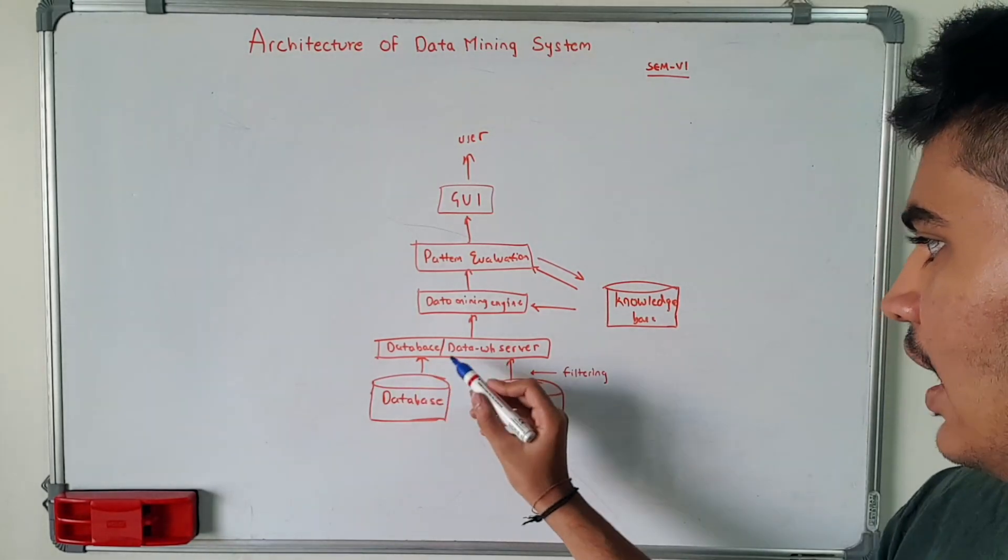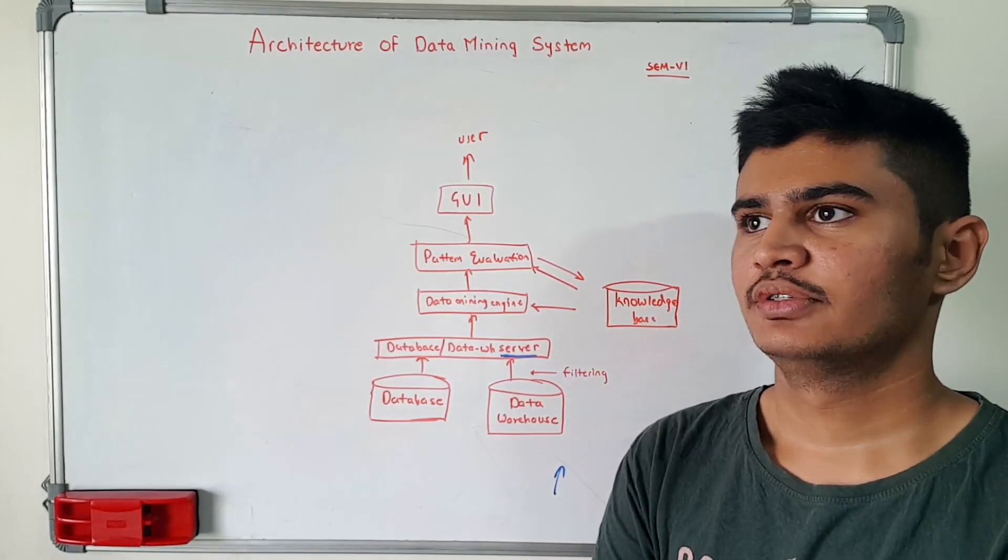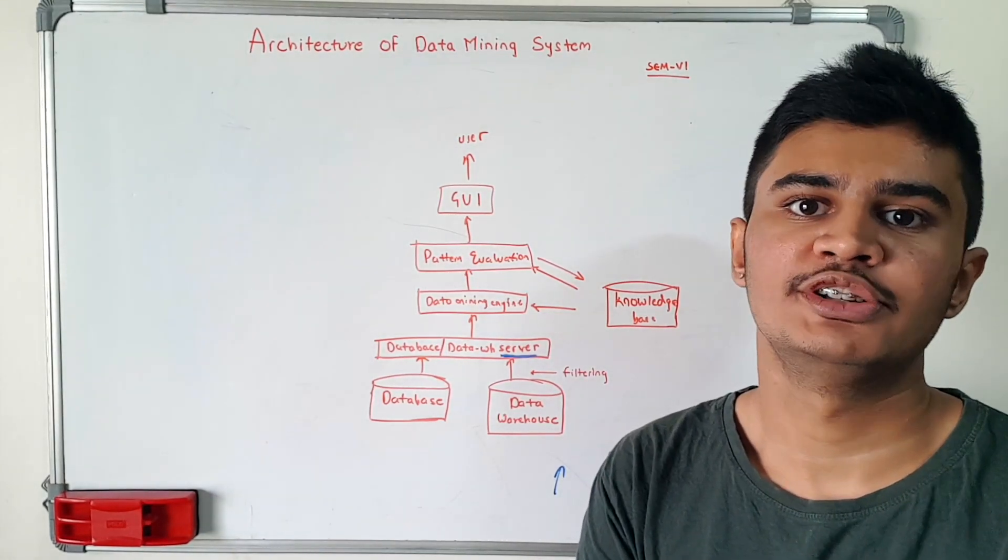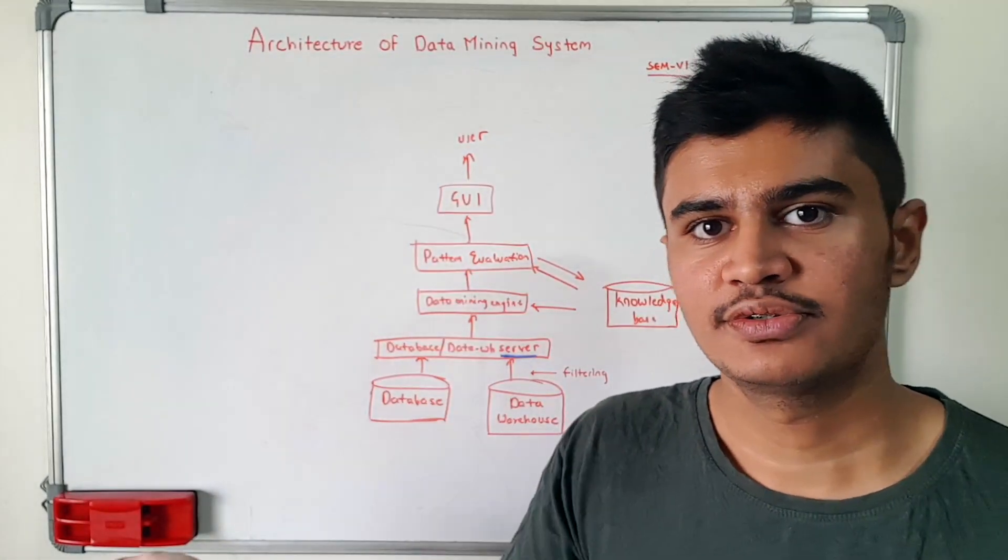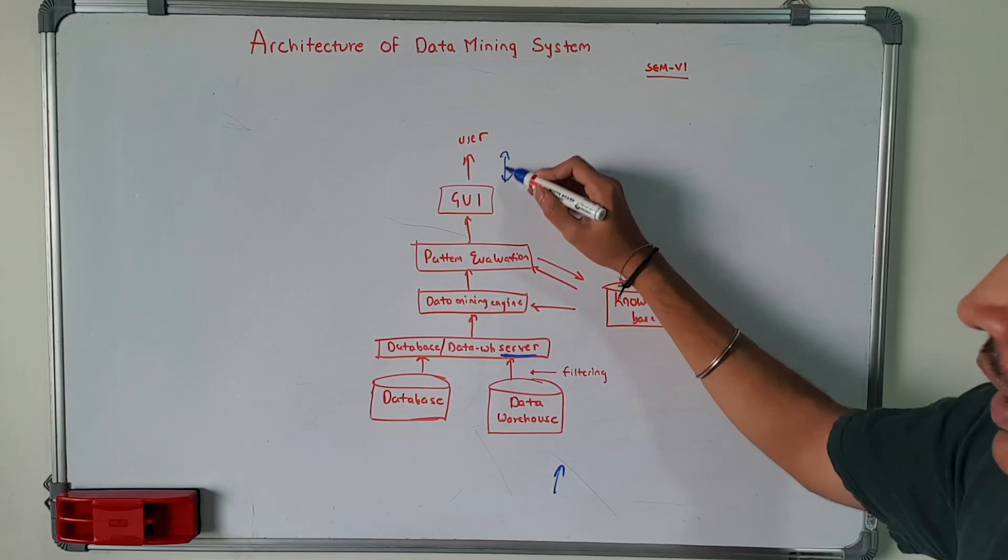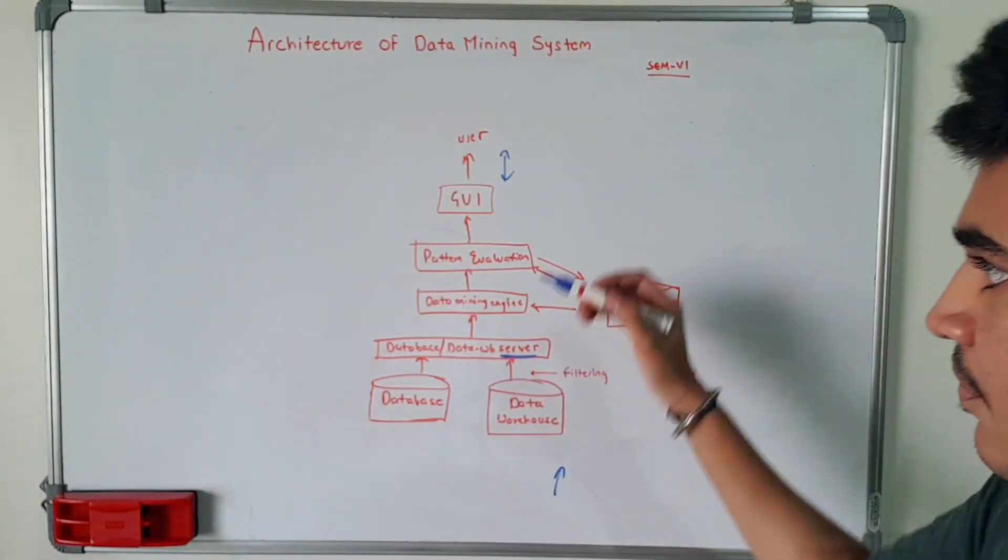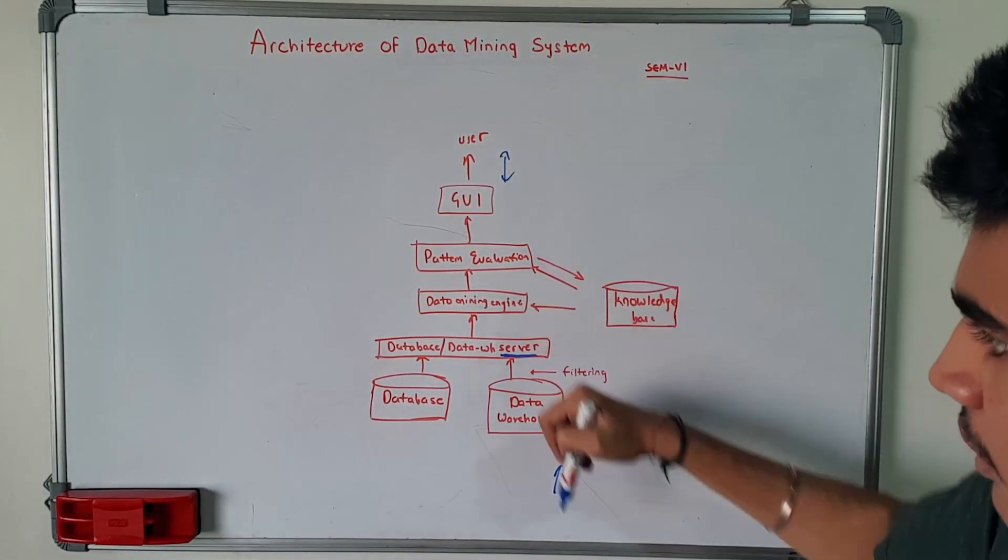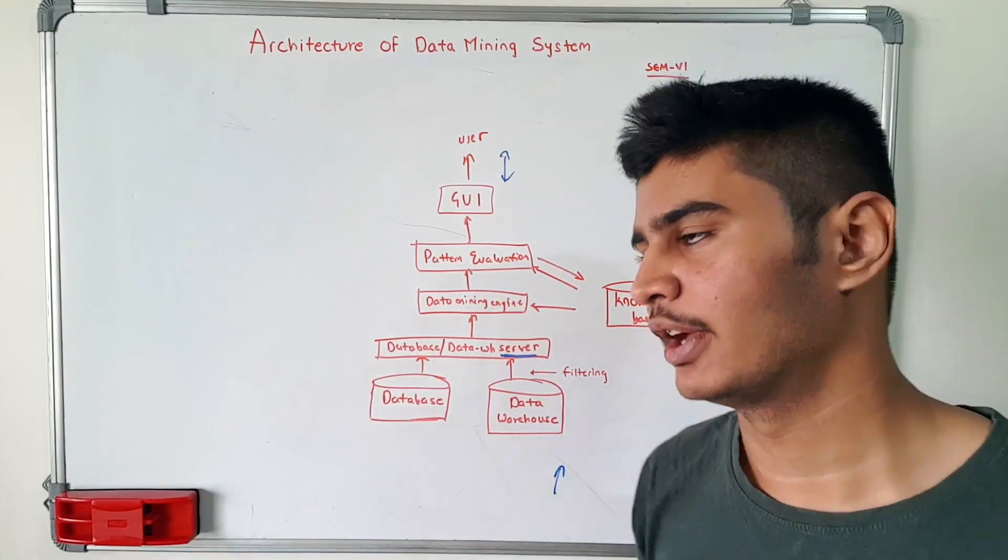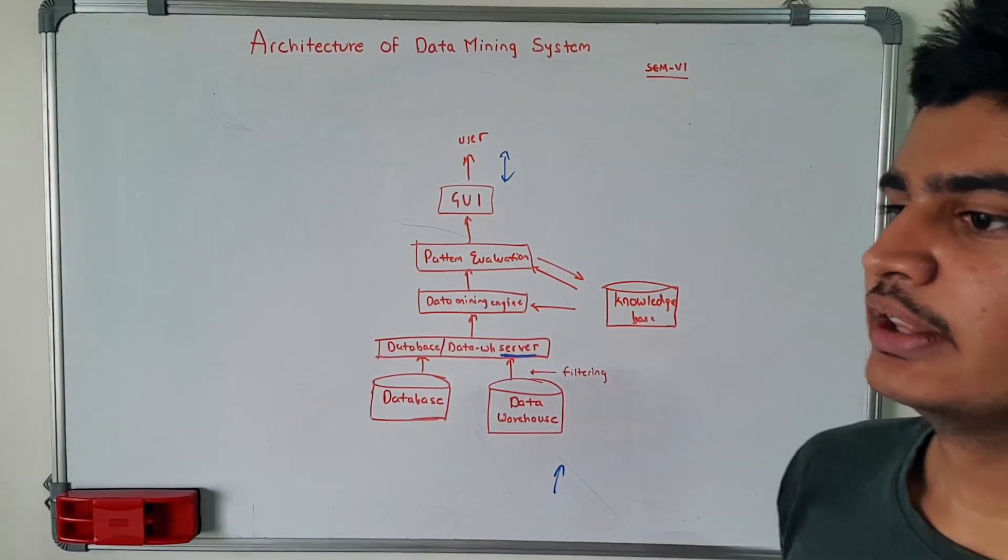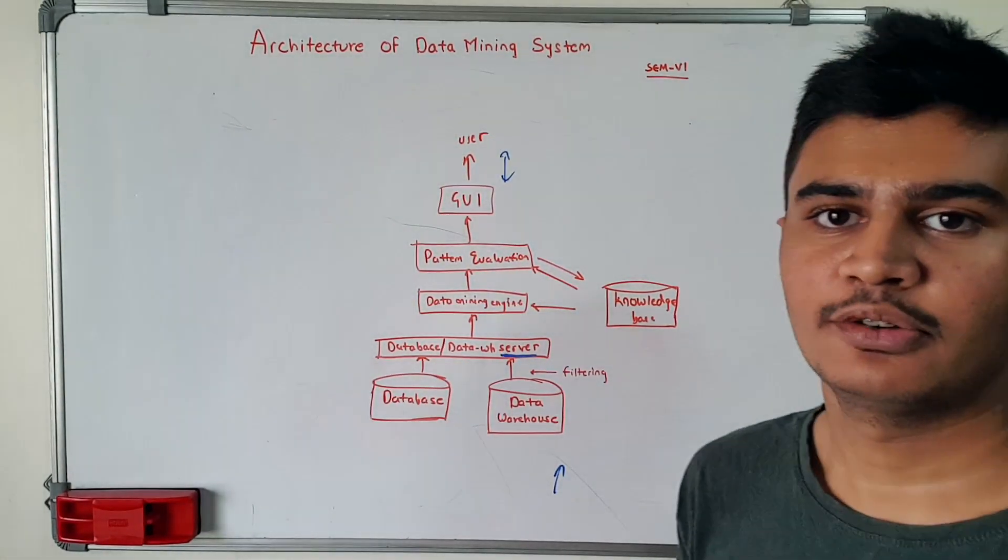Now what this means is suppose we have to find particular data or we have to fetch data. Basically the user will interact with the GUI and GUI gives us output. That's the only thing which we can see, but in the internal workings these are the steps which basically happen when we fetch for a particular data. The data which the user wants will be fetched by the data warehouse server.